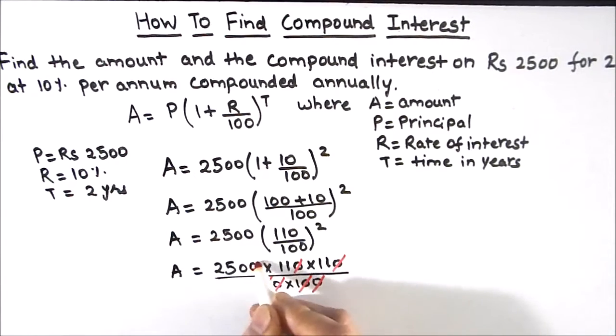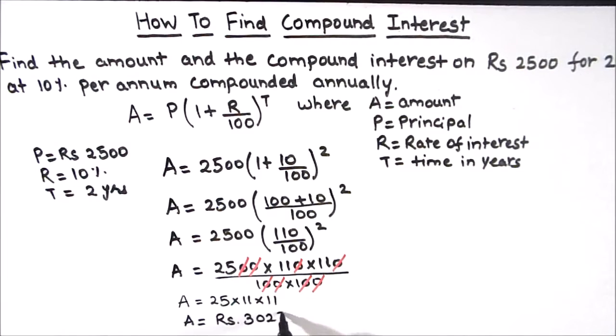We'll simplify this. These two zeros get cancelled with the zeros here, and these two zeros get cancelled with the zeros here. So amount will be equal to 25 times 11 times 11, which is equal to rupees 3025.